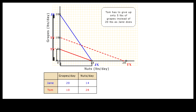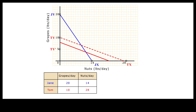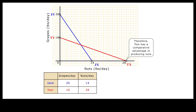That is 5 pounds of grapes. For Jane, the blue production function, she has to give up 20 pounds of grapes to produce the same 14 pounds of nuts. That is 15 pounds more grapes than Tom. Because of Tom's lower relative cost of producing nuts in terms of grapes foregone, we say Tom has a comparative advantage in producing nuts.